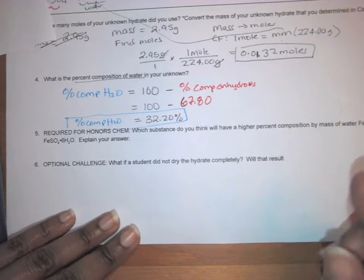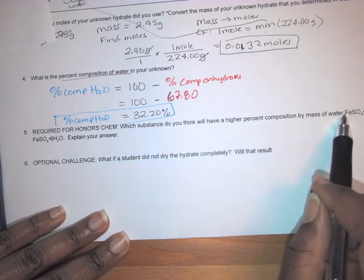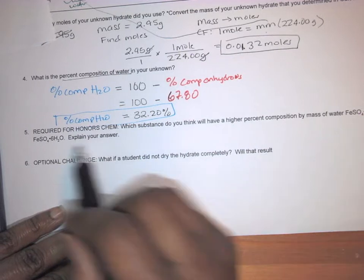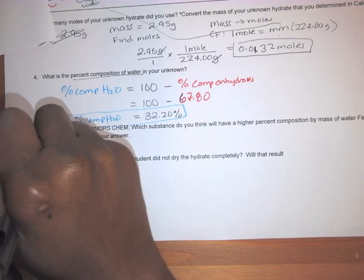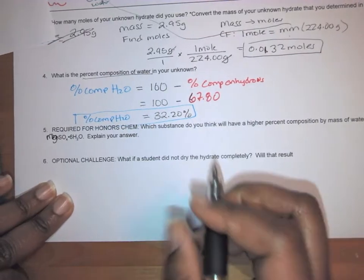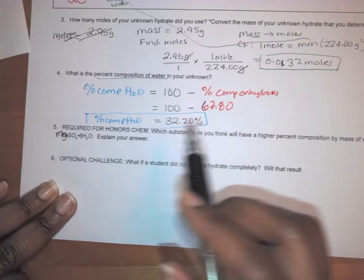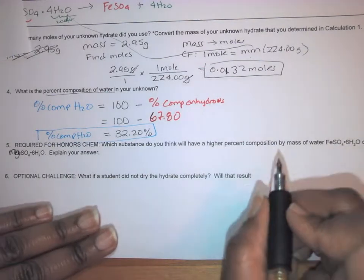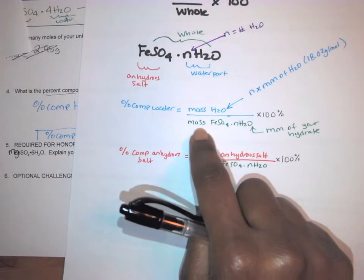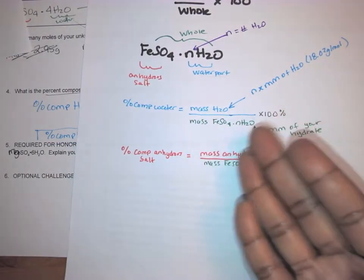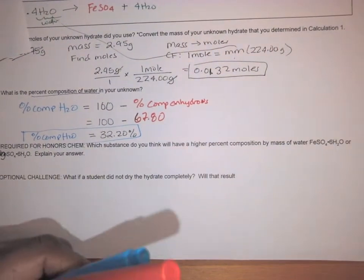The next question is for honors chem only. And this question asks, which substance do you think will have a higher percent composition by mass of water? Is it going to be this one or, that's actually a mistake here. One of these should be magnesium. It'll be corrected in your document. So would it be the iron sulfate hexahydrate or will it be the magnesium sulfate hexahydrate? Now in order to do that, what you want to think about is, we know the equation for the percent composition of water to be mass of H2O over the mass of whatever the hydrate is, right?